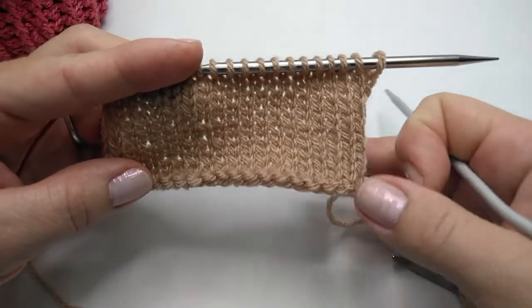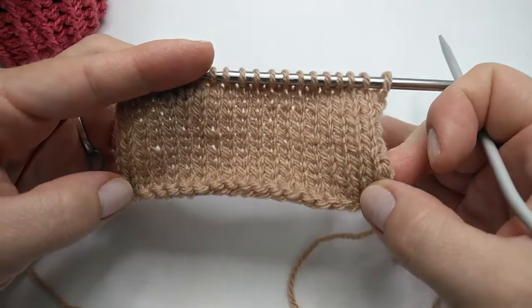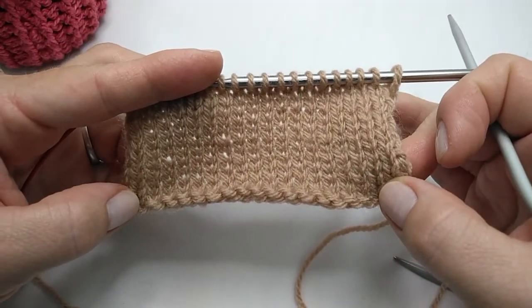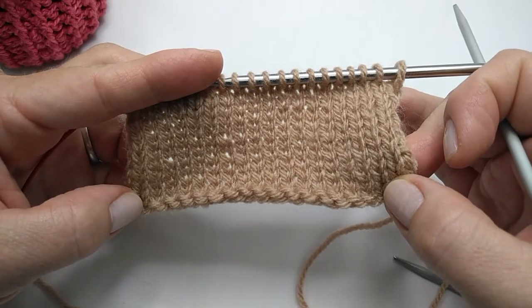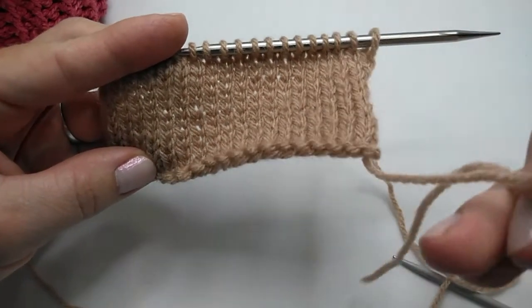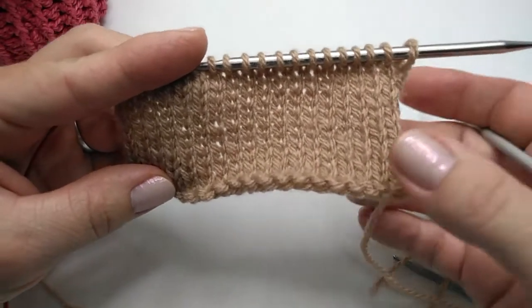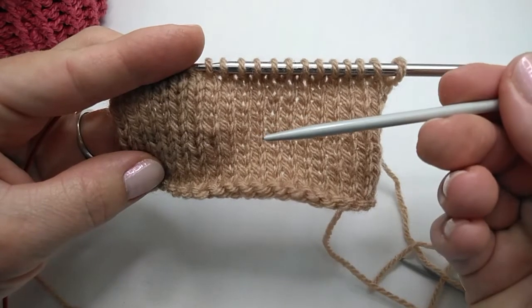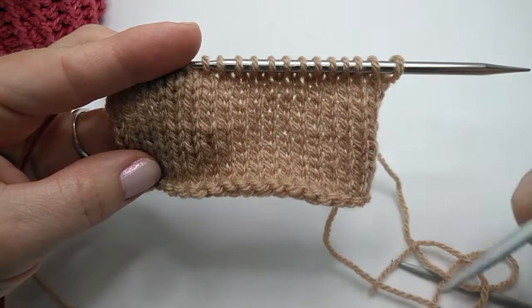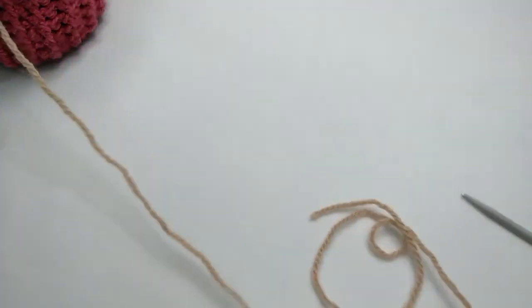Let me first show you how to do the long tail cast on. And just a quick tip, if you have done the long tail cast on and you wonder which way of the fabric is the right side, when your tail end is on your right hand side, the piece of fabric facing you is the right side of the fabric. Okay so let's quickly do the cast on.